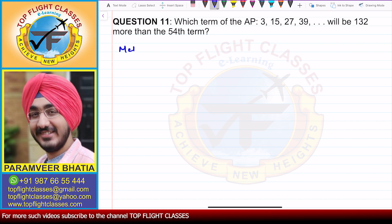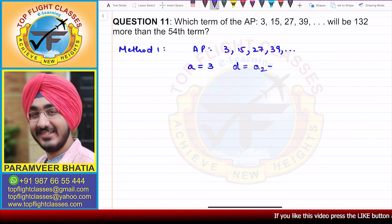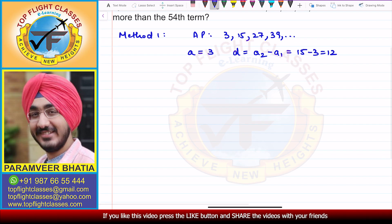The first method: AP is given here as 3, 15, 27, 39 and so on. The first term in AP is equal to 3. And if we have D, that is the second term minus the first term, that is 15 minus 3, which comes out to be 12. So D is 12 in this case.